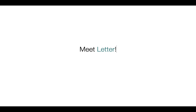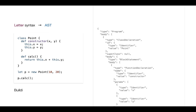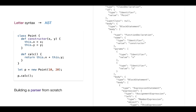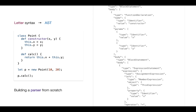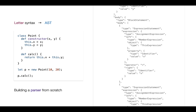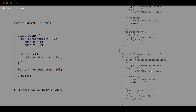Let's jump into practice. Please meet Letter — a syntax for a programming language with a functional heart and object-oriented support. This syntax will be parsed into AST. We agreed to use JSON structure for AST with the type property, but you may also parse into S-expression format. We'll show how to transform different types of AST between each other. The Letter syntax is on the left, and on the right we see the parsed AST.